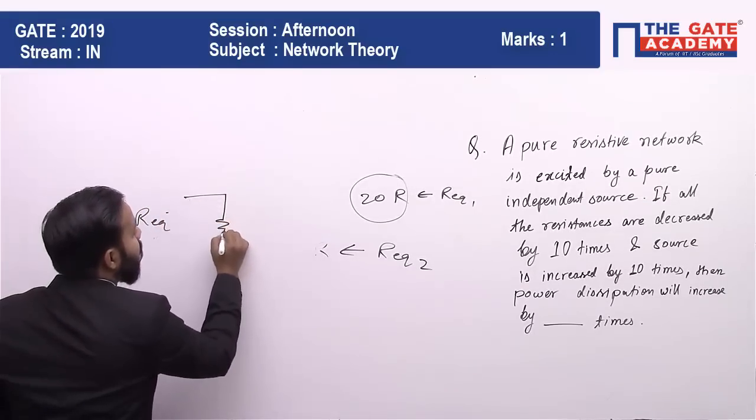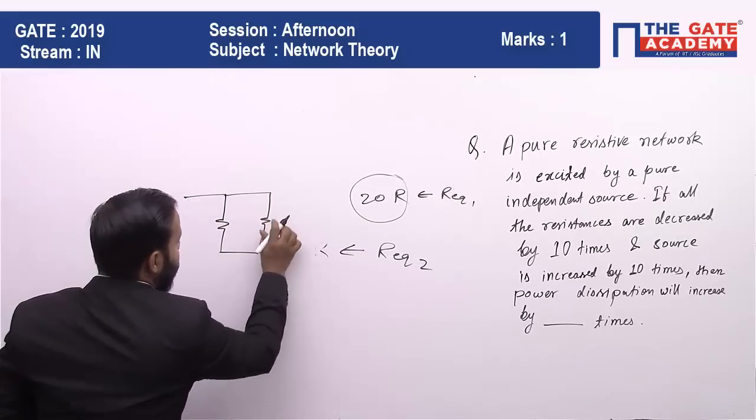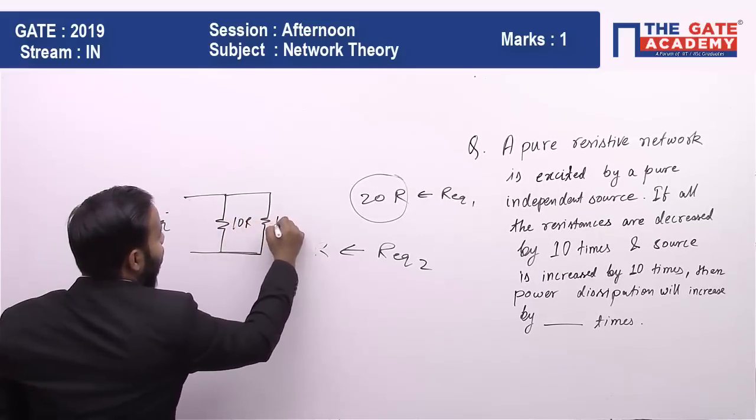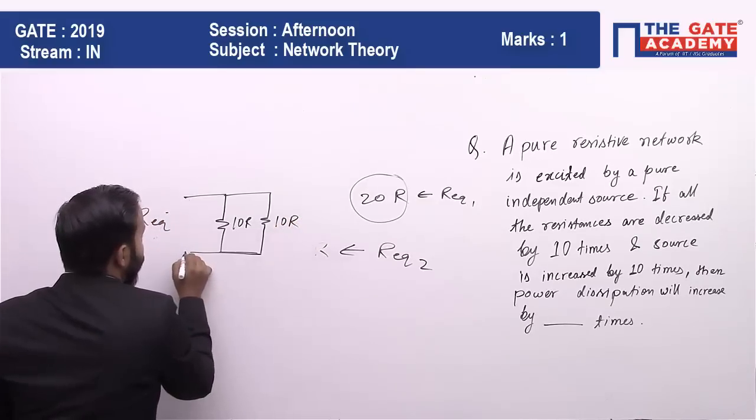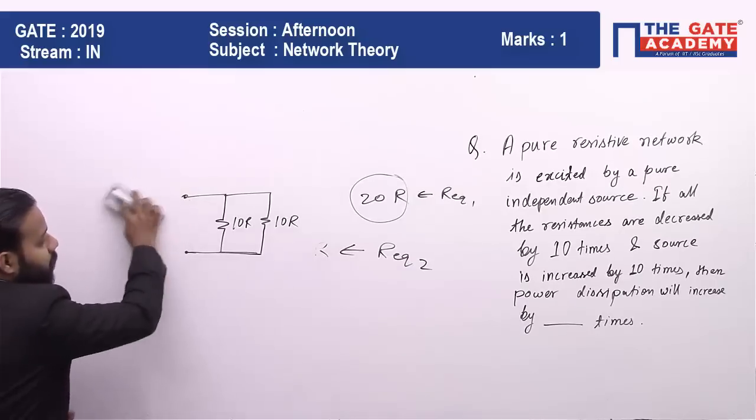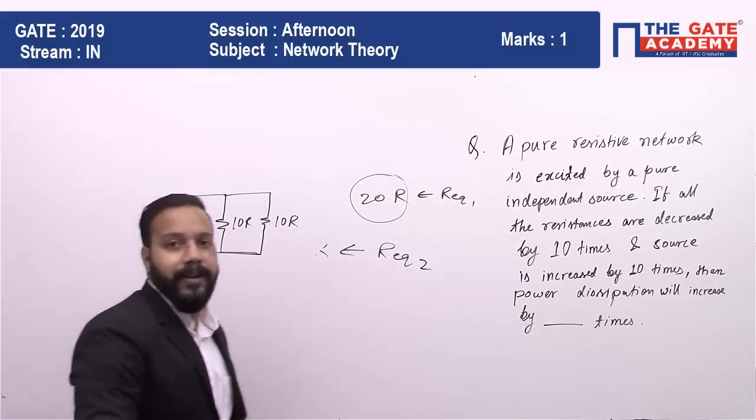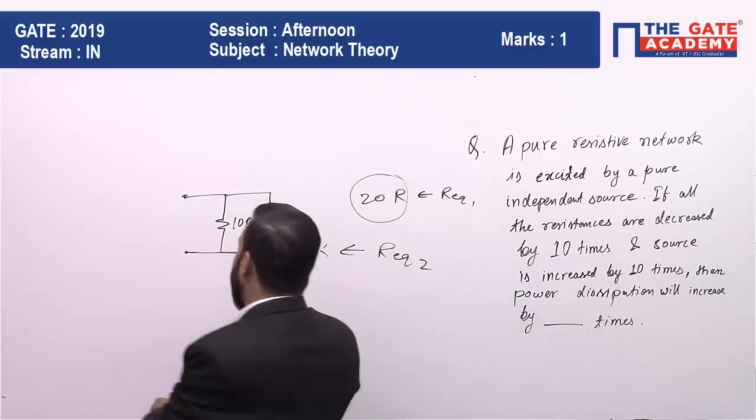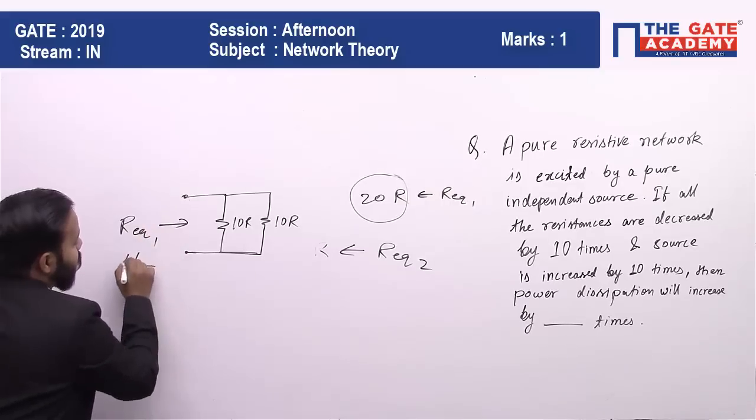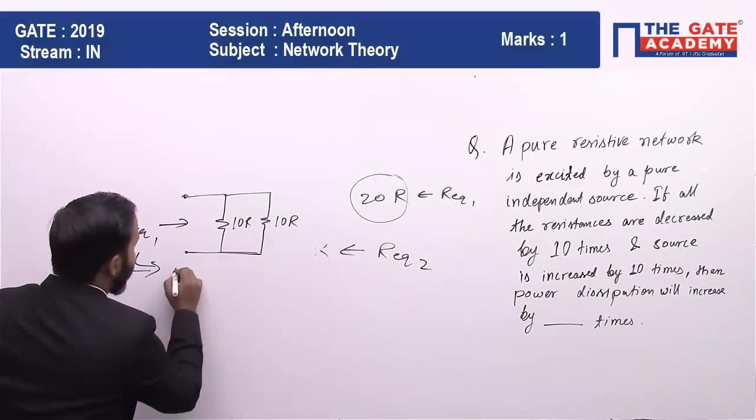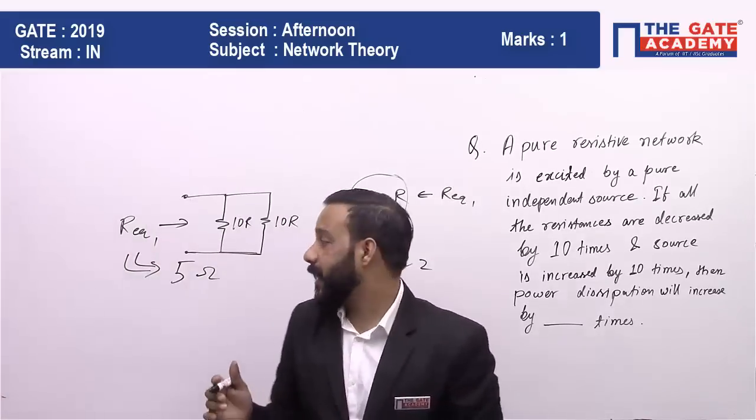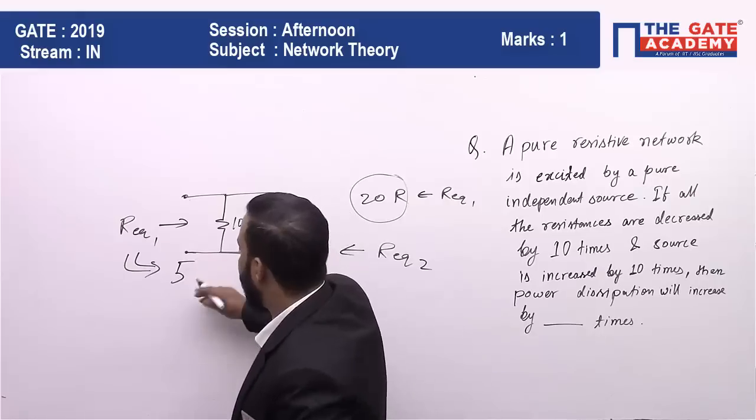Let's say we have 10R and 10R in parallel. The equivalent resistance R_eq1 equals half of 10R, which is 5R. So 10R and 10R in parallel gives us 5R.